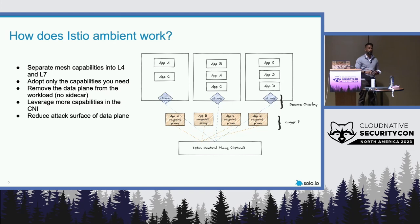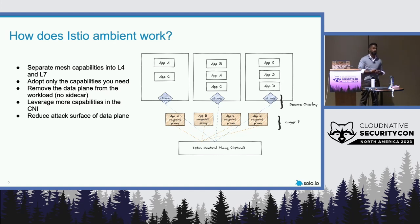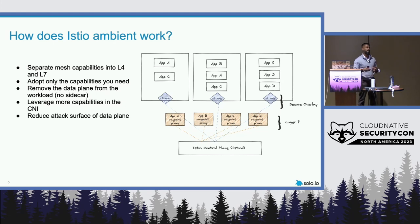If you've ever worked with IPsec before, there's something interesting that goes on. You have to define an access control list that tells the tunnel which source traffic to encrypt. This is how we also operate in the world of ambient mesh — we have traffic tagged towards the Z-tunnel pod that tunnels over to another node. Once we've identified that traffic, it's encrypted, sent across the tunnel, and it gets to its destination.